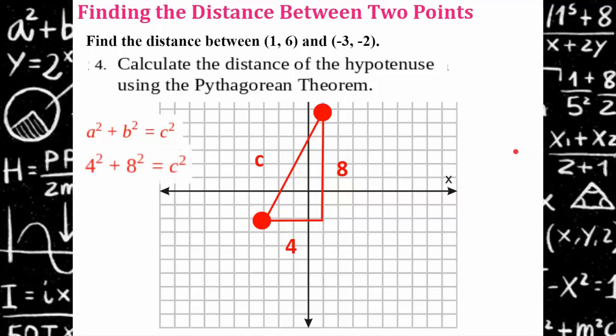Evaluate for the values of the legs four and eight. Do the math. Four squared is 16 plus eight squared is 64. Add 16 and 64 to get 80.